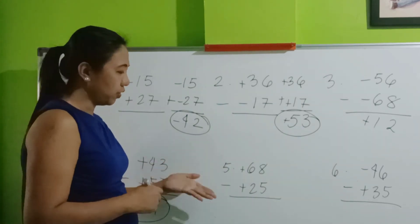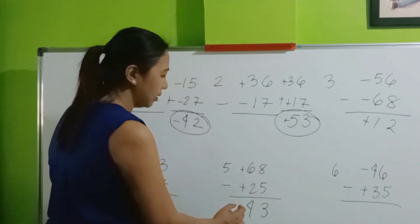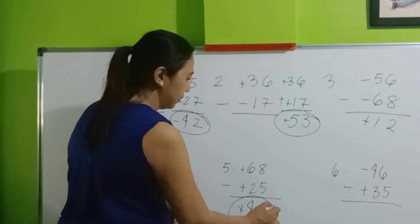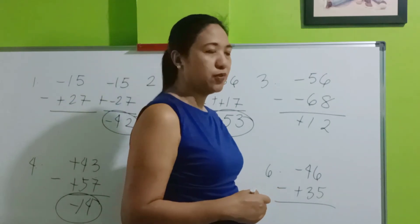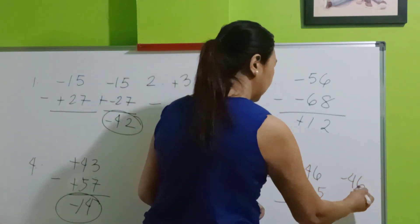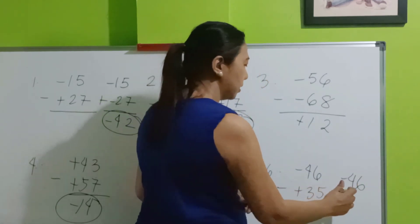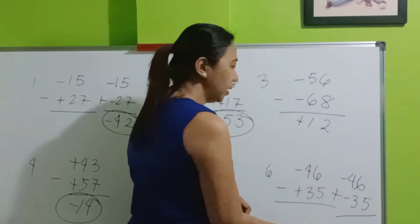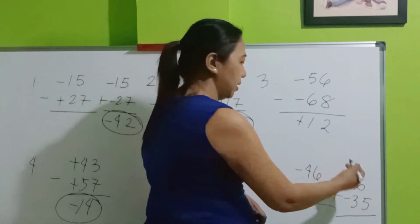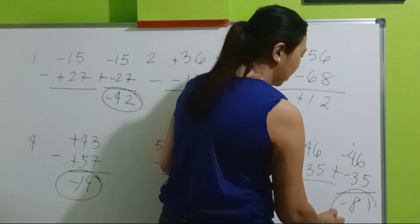Number 5: they are both positive numbers, so let's just subtract. And then positive 43. And the last one: negative 46 minus positive 35. Copy. This becomes plus. This becomes negative 35. And then follow the rule in addition of integers. Negative 81.